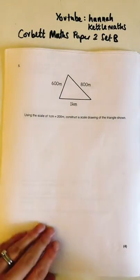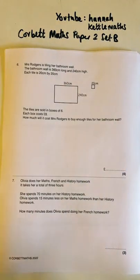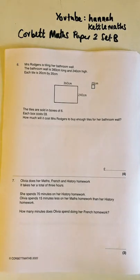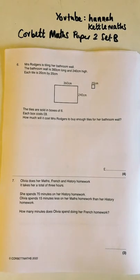Right, question six. Mrs Rogers is tiling her bathroom wall. The wall is 360 cm long and 240 cm high; each tile is 20 by 20. There are lots of different ways to do this question. This is the Corbett Maths list for Edexcel, but it's helpful for AQA too.